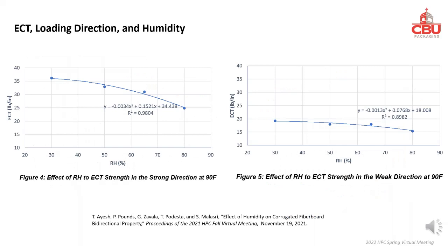The two graphs shown are ECT versus Relative Humidity (RH). On the left, load was applied in the strong direction, along the flute. On the right, load was applied in the weak direction, perpendicular to the flute. The strong direction has higher ECT than the weak direction. In both graphs, ECT decreases as relative humidity increases.